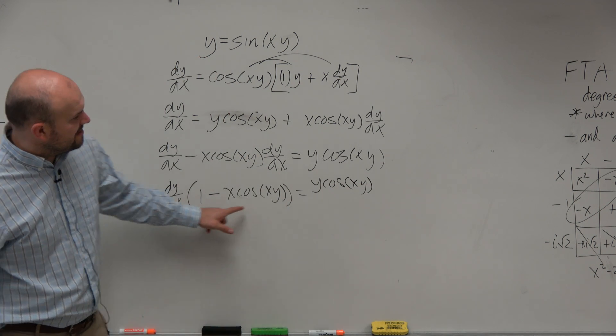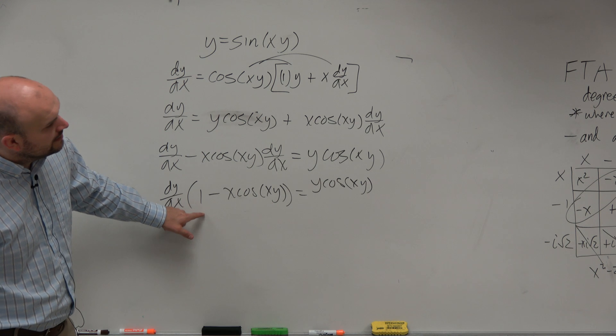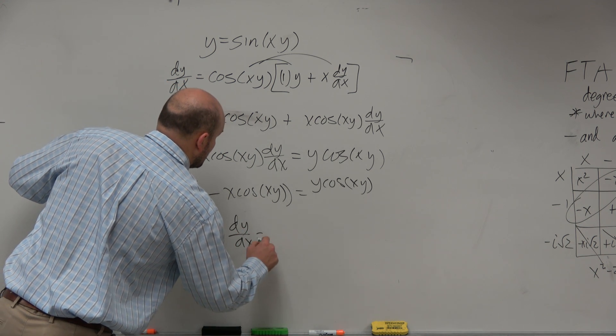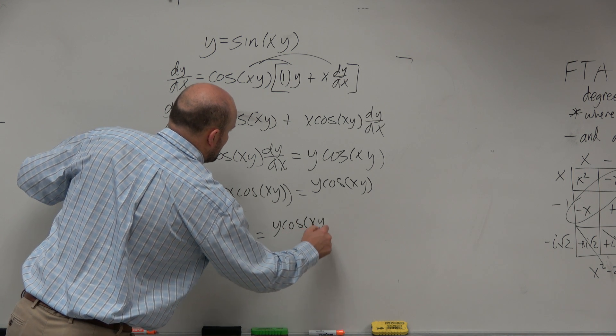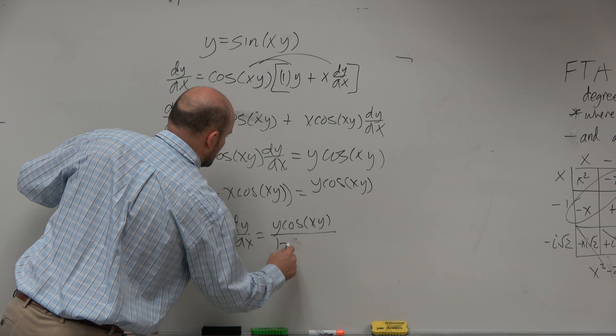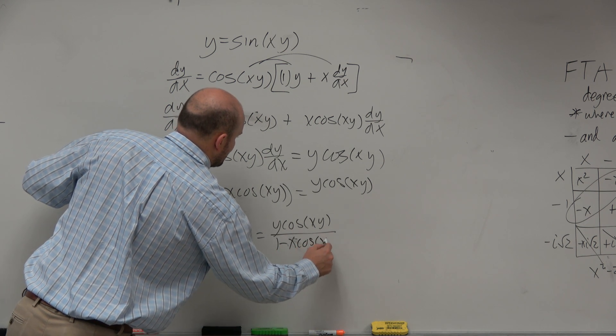And then I'll just divide by this quantity on both sides. So my final answer is dy/dx equals y cosine of xy all over 1 minus x cosine of xy.